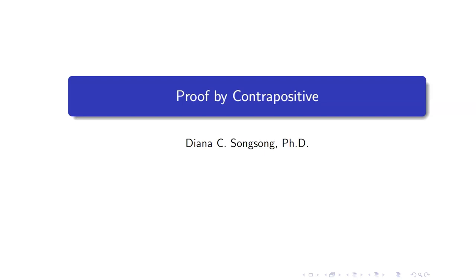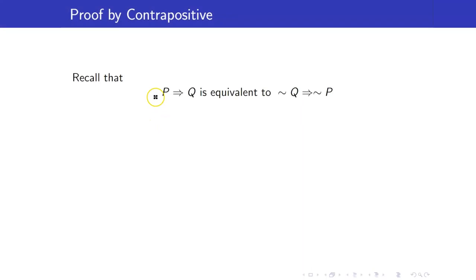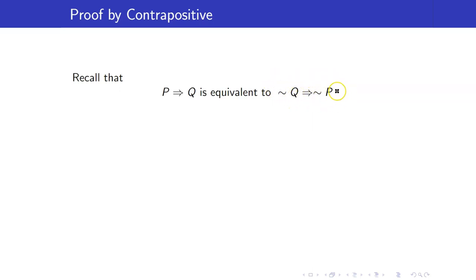In this lesson, we are going to discuss proof by contrapositive. Let us recall that the implication P implies Q is equivalent to its contrapositive, not Q implies not P.